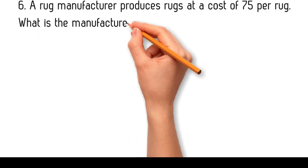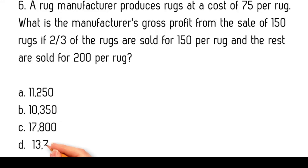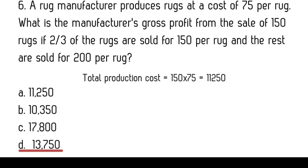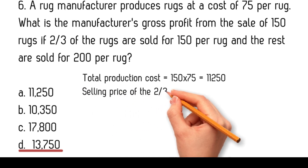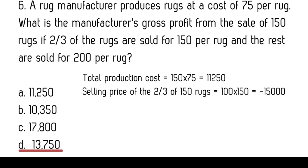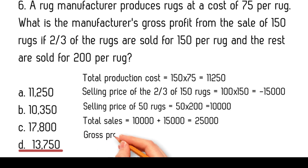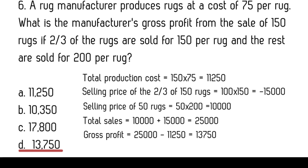A rug manufacturer produces rugs at a cost of 75 pesos per rug. What is the manufacturer's gross profit from the sale of 150 rugs if two-thirds of the rugs are sold for 150 pesos per rug and the rest are sold for 200 pesos per rug? The total production cost equals 150 times 75 equals $11,250. The selling price of 100 rugs equals 100 times 150 equals $15,000. The selling price of 50 rugs equals 50 times 200 equals $10,000. Total sales equals $25,000. Gross profit equals $25,000 minus $11,250 equals $13,750.